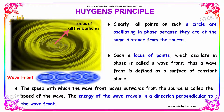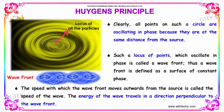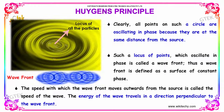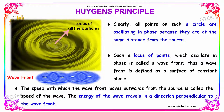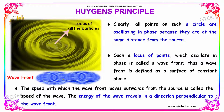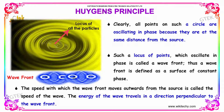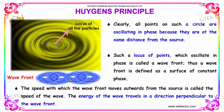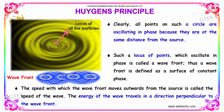A wavefront is defined as the surface of constant phase. The speed with which the wavefront moves outwards from the source is called the speed of the wave. The energy of the wave travels in a direction perpendicular to the wavefront.